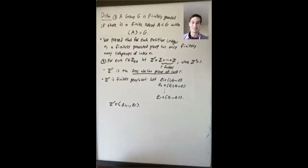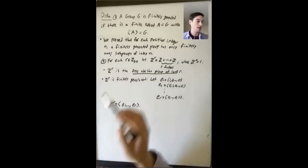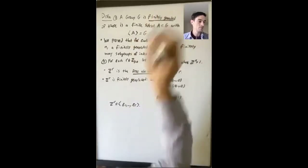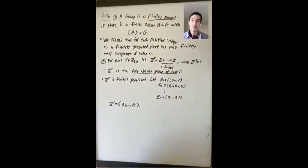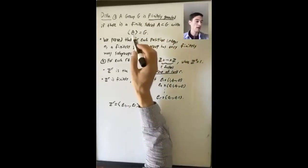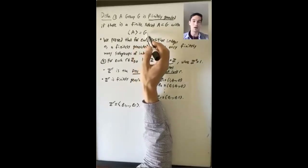The next thing we want to talk about in this lecture is the fundamental theorem of finitely generated abelian groups. In order to do that, let's first talk a little bit about finitely generated abelian groups. This is something we've encountered before, but let's review it. What does it mean for a group G to be finitely generated? It means that even if G is maybe infinite, there's a finite subset A of G such that the subgroup generated by A is all of G.